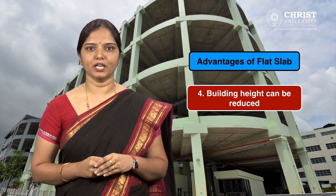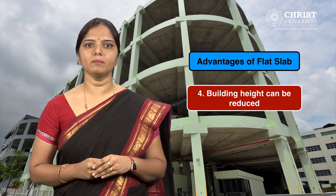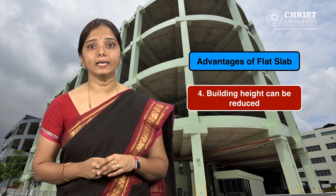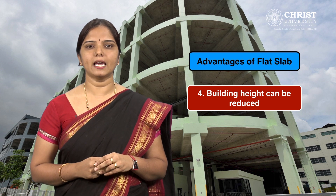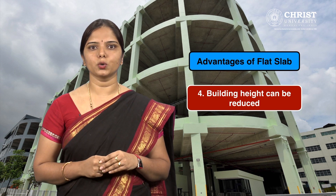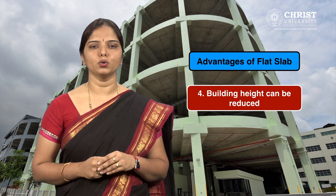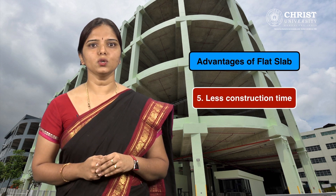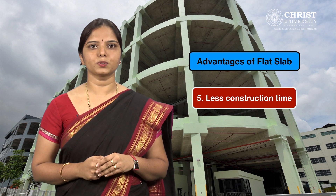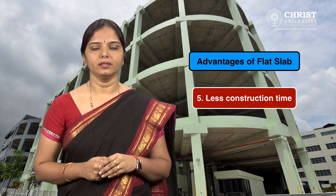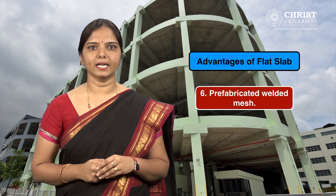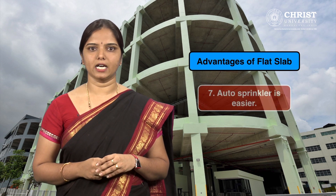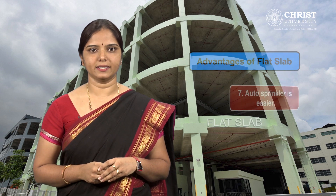Ease of formwork installation can be achieved by providing big table formwork. Building height can be reduced — as no beam is used, floor height can be reduced and consequently building height will be reduced, with approximately 10 percent savings in vertical members. Foundation load will also reduce. Less construction time is achieved using big table framework. Prefabricated welded mesh offers standard sizes, less installation time, and better quality control. Auto sprinkler installation is also easier.